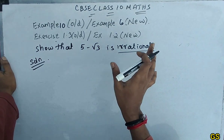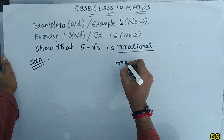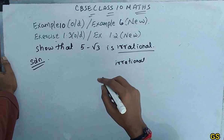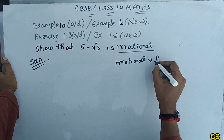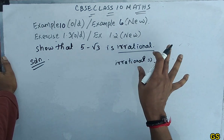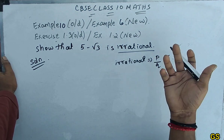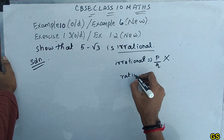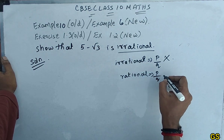First of all, let me recall: irrational numbers cannot be written in P by Q format. Rational numbers are in P by Q format.